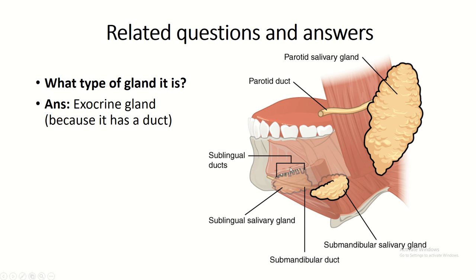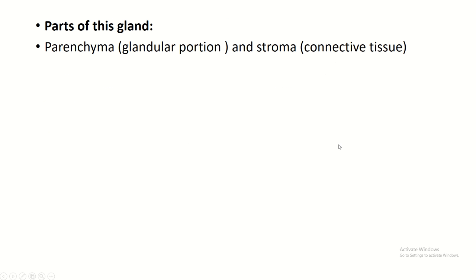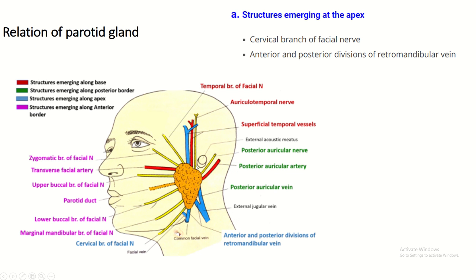The parotid gland is an exocrine gland — it has a duct. It is purely serous in nature and has two parts: parenchyma and stroma. The apex of the parotid gland is related to the cervical branch of the facial nerve and the anterior and posterior divisions of the retromandibular vein.